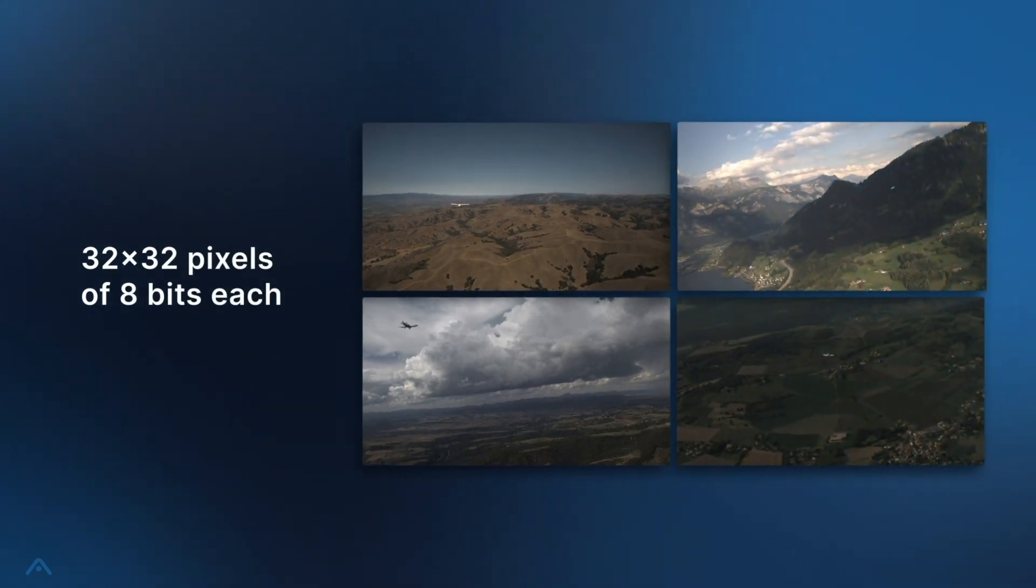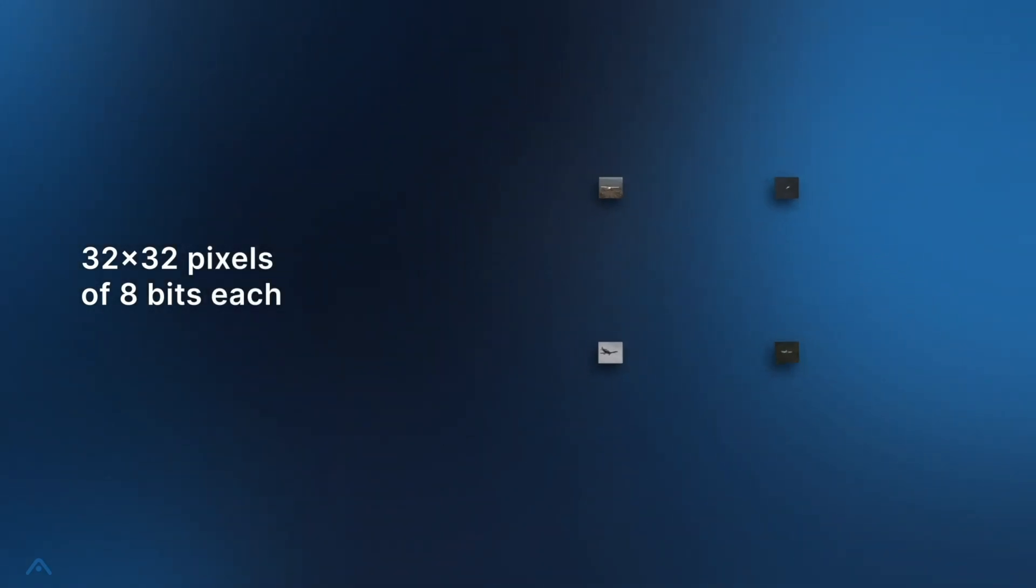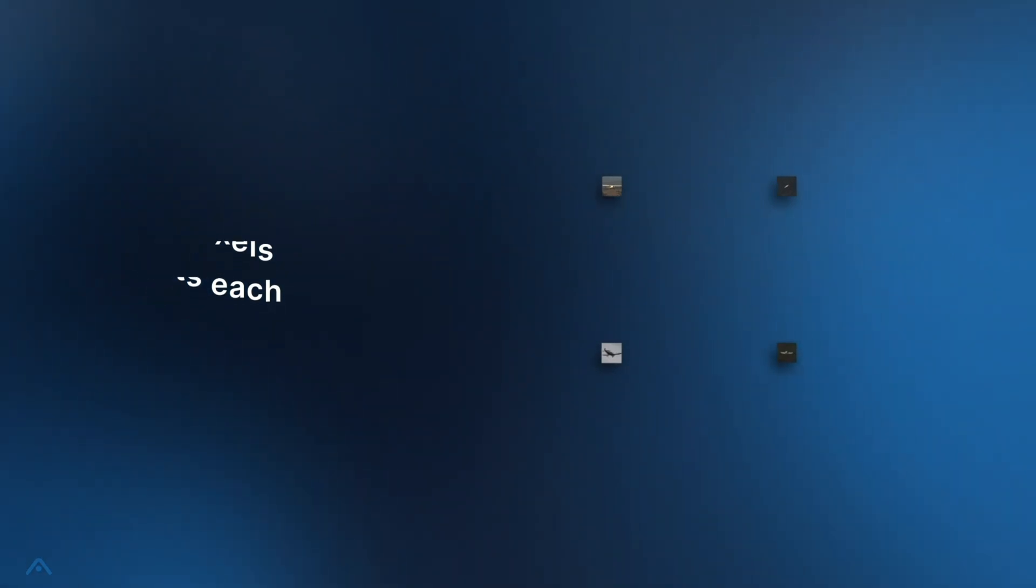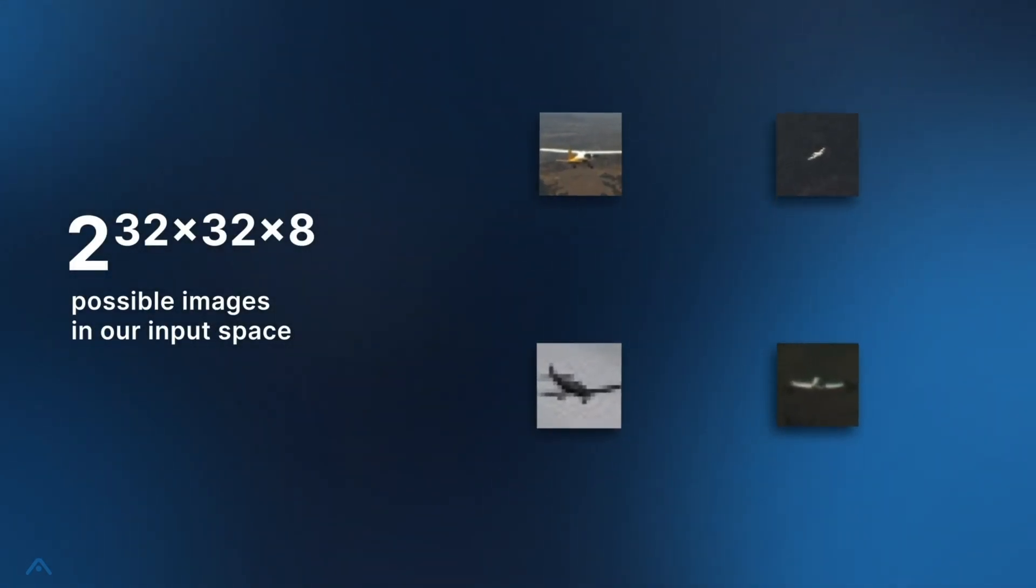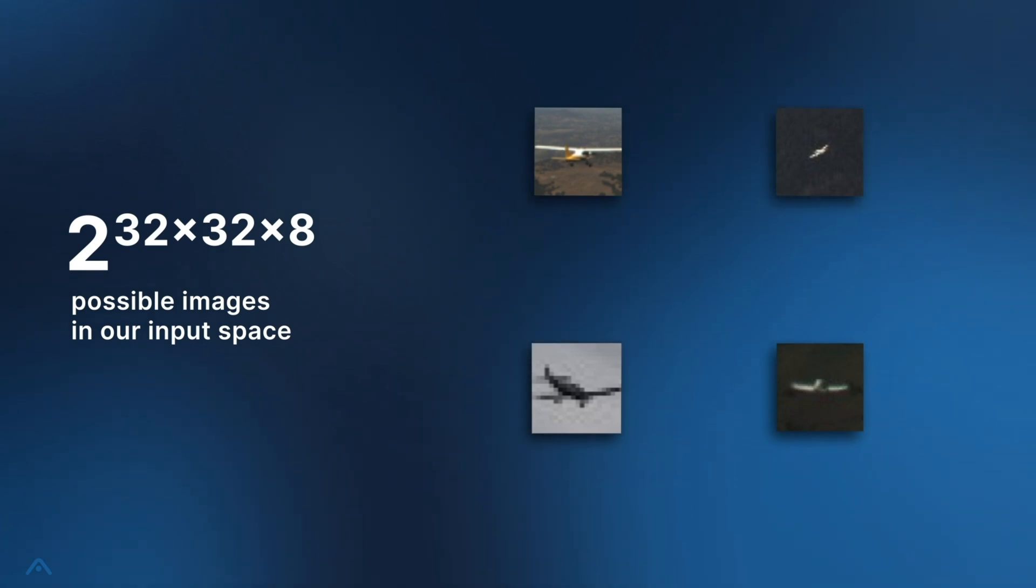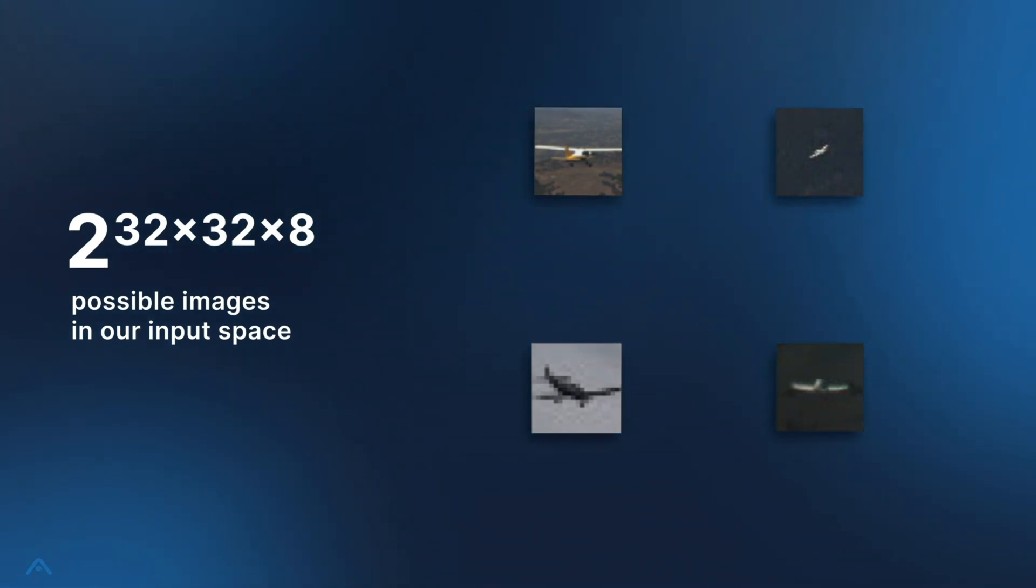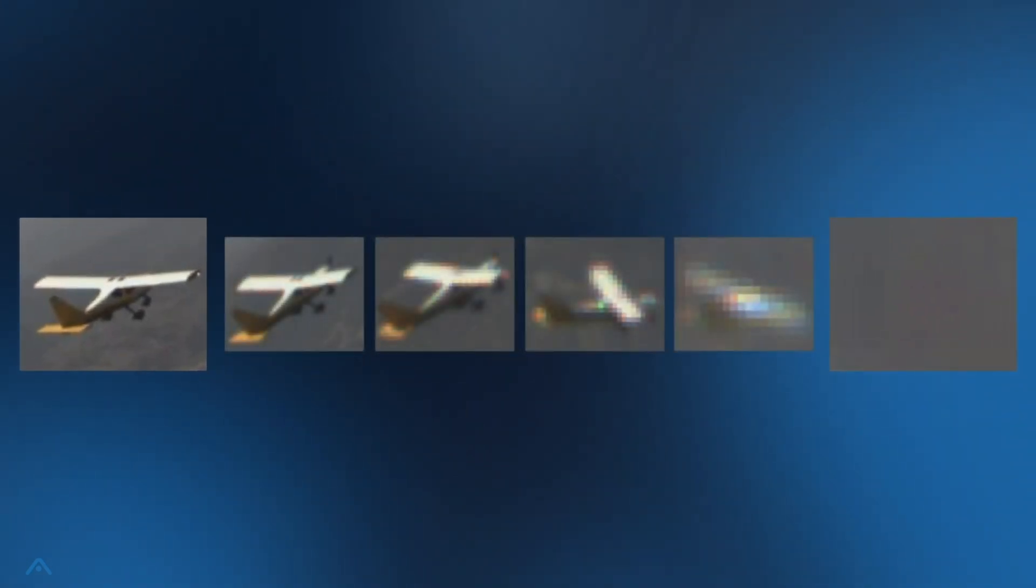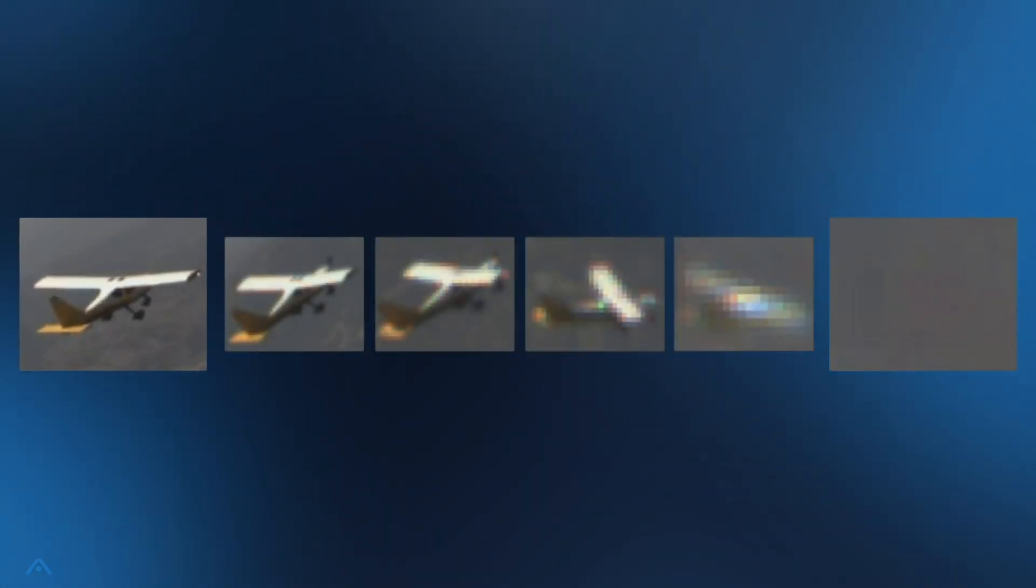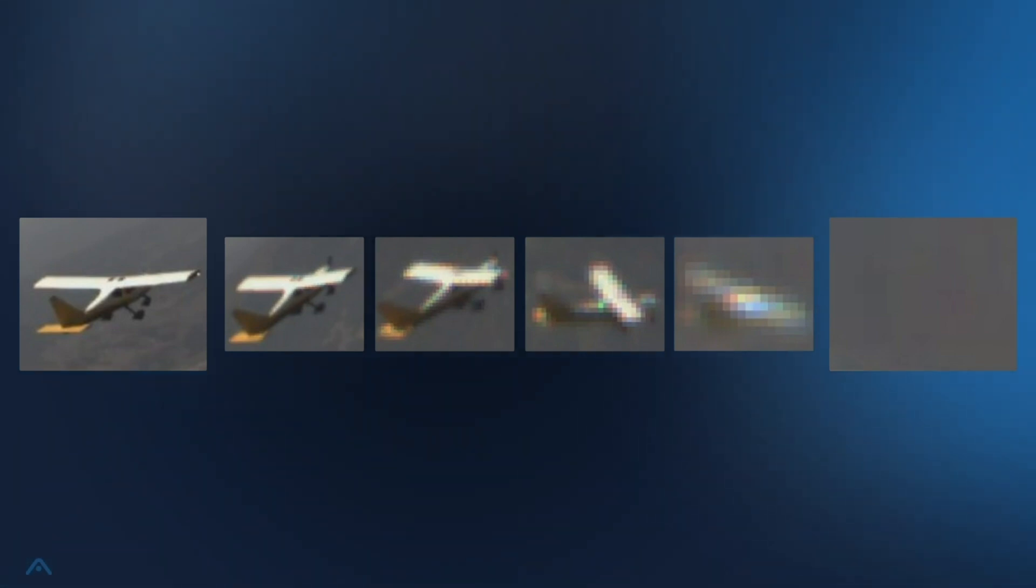Even if our training data set was accurate, there may simply not be enough information in small images to make the call. There are approximately one followed by 2,466 zeros possible images in our input space. Between any image that we would clearly label yes and one we would clearly label no, there are insanely many images that differ only by one bit in one pixel, which are on a decision boundary.